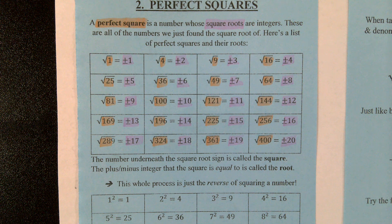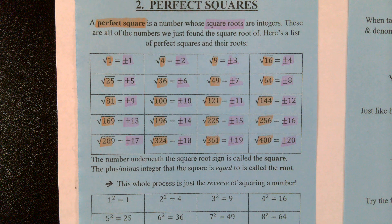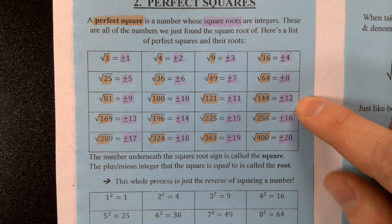Hopefully you can see the difference between a perfect square and a square root based on those two different colors — perfect squares being in orange, square roots being in purple. Now, half of this chart we already have memorized. Typically in elementary school, we stop at 12 when doing our multiplication tables.